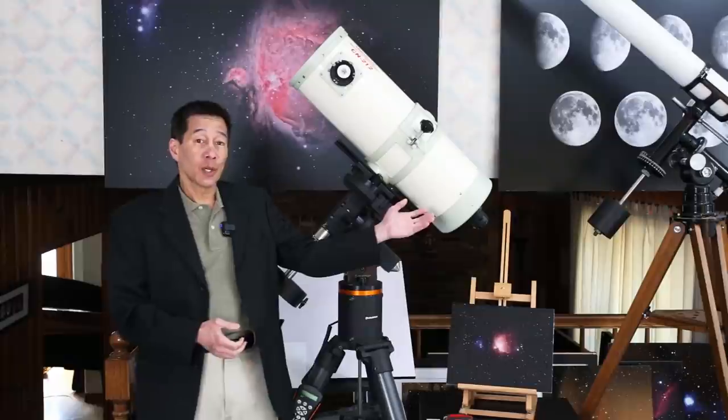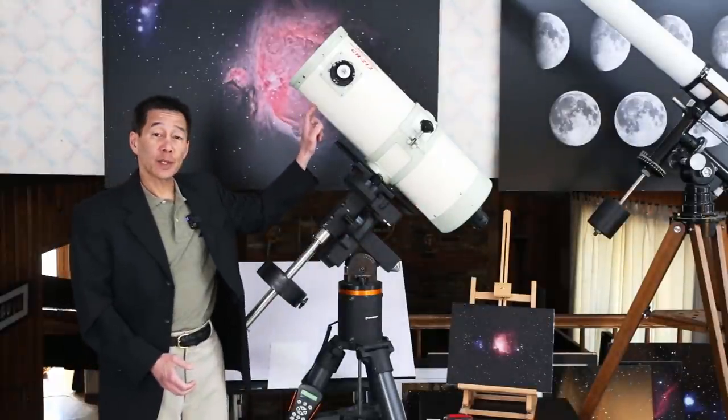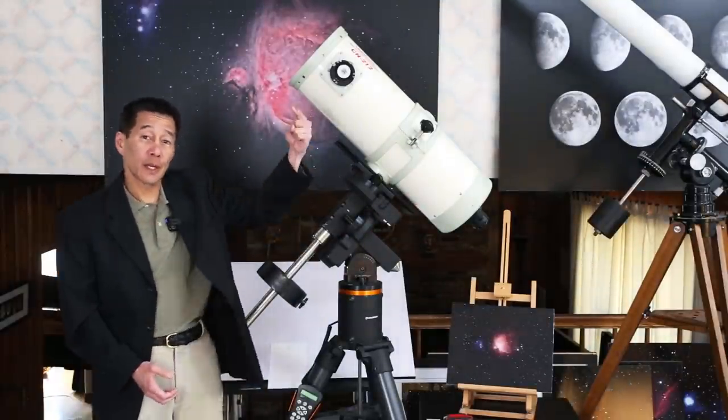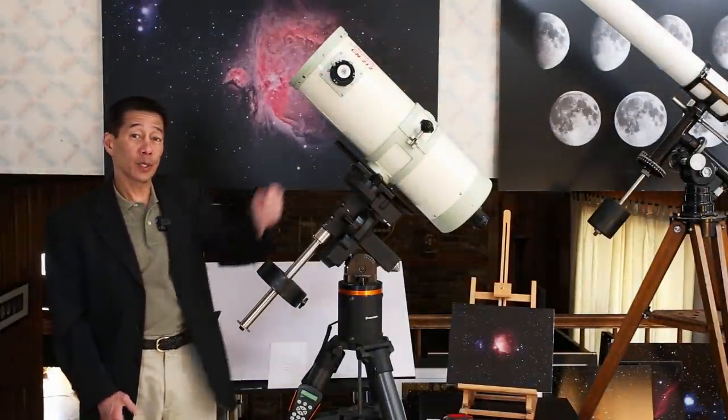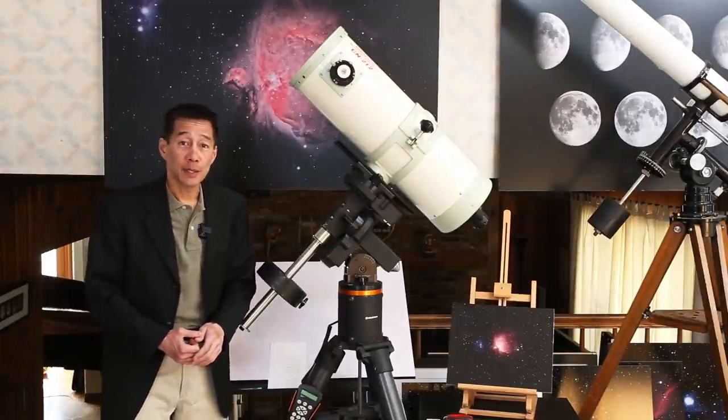There's an 8-inch mirror at the back which collects light and diverts it to a secondary mirror here which focuses the light out towards the eyepiece. This is where you put the eyepiece and this is where you look. To change magnifications, you change eyepieces.